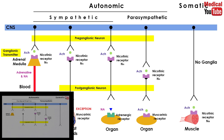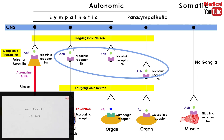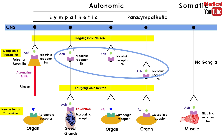From the previous lecture we already know that cholinergic neurons are located in the autonomic ganglia of both parasympathetic and sympathetic divisions, the postganglionic fibers of the parasympathetic division, the postganglionic sympathetic division of sweat glands, and the preganglionic fibers terminating in the adrenal medulla. In addition, cholinergic neurons innervate the muscles of the somatic system and also play an important role in the central nervous system.